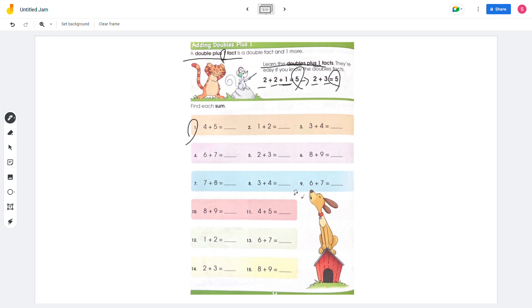When we look at the first problem, we have 4 plus 5, which is 4 plus 4 plus 1. And this is 9, because 4 plus 4 is 8 plus 1 is 9. On number 2, we have 1 plus 2, which is 1 plus 1 plus 1, and that's 3.